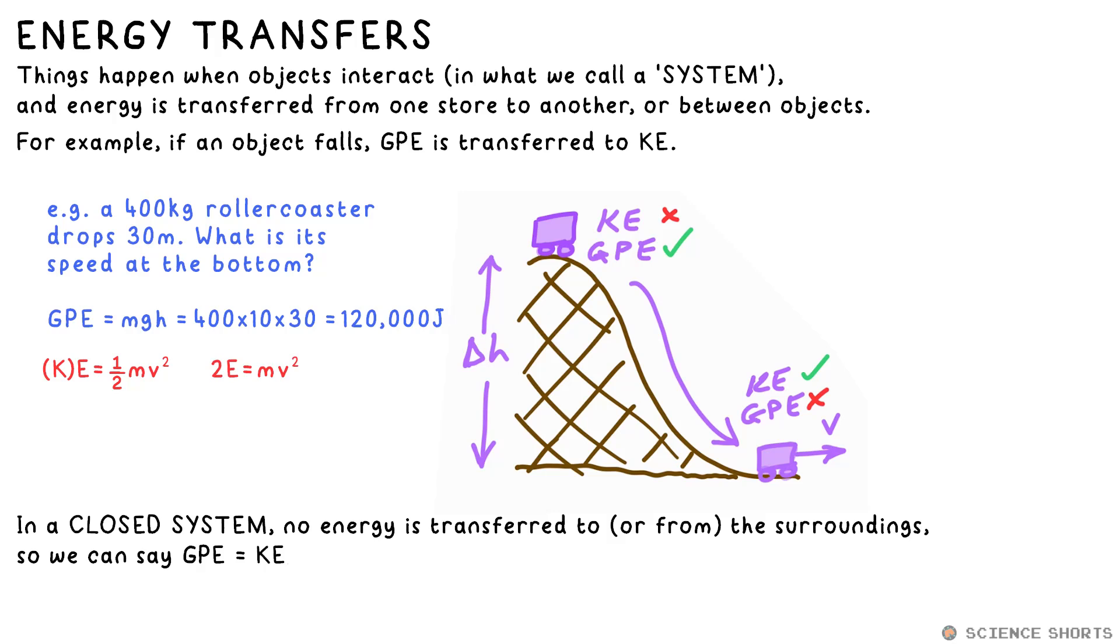To get rid of the half, we double both sides. That gets rid of the half, and the other side is doubled. We've done the opposite with it. Then to get rid of the mass from the right-hand side, well we're multiplying by it on the right, so we just divide by it on the left, and that gets rid of it.